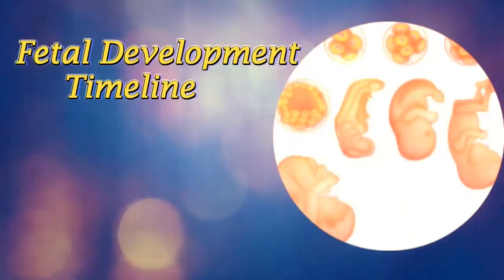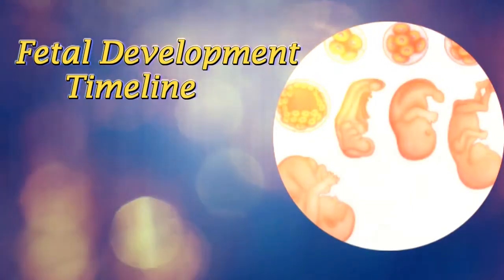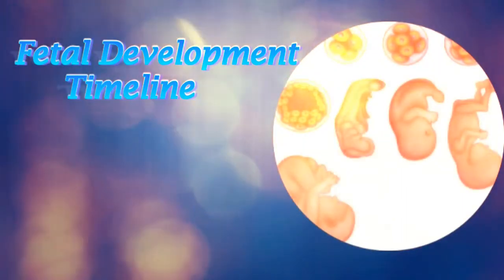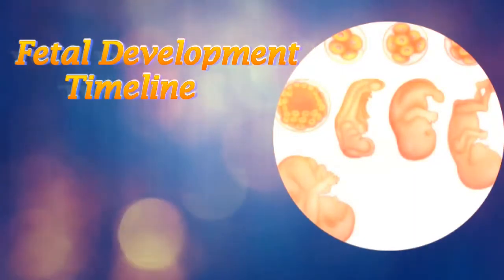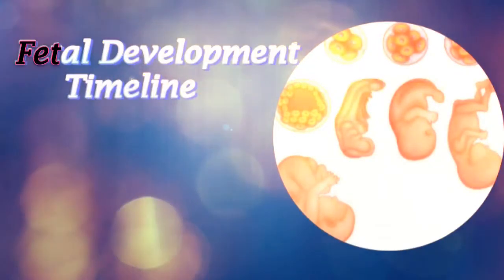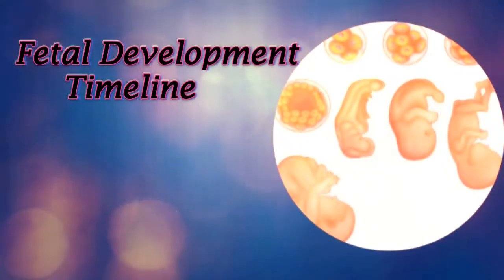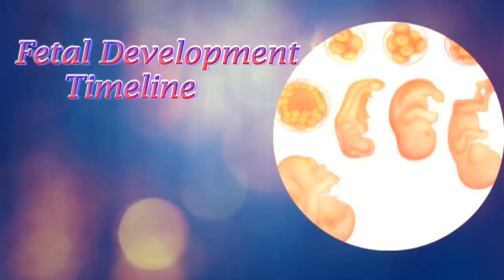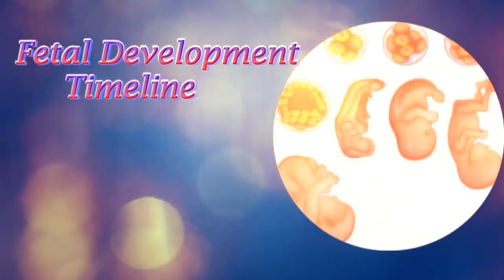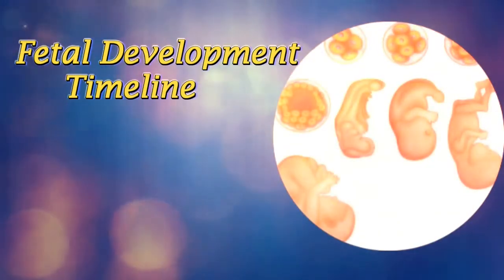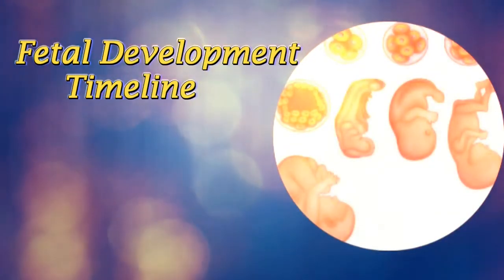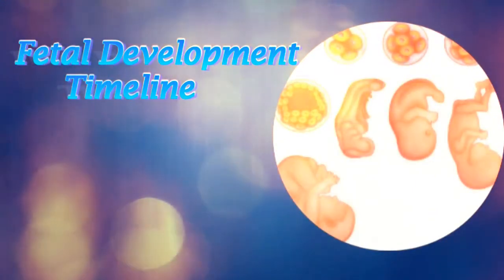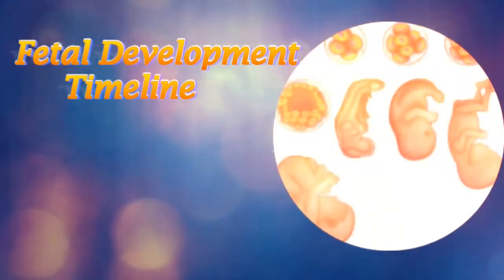The fetal development timeline traces the events that take place as an embryo grows into a fetus, which eventually grows into a full-term baby. The word fetus signifies the developing mammal after the embryonic stage until just before birth. An embryo, on the other hand, is considered to be the time span from fertilization up till two months after fertilization. The fetal development timeline traces the events which occur during this stage.